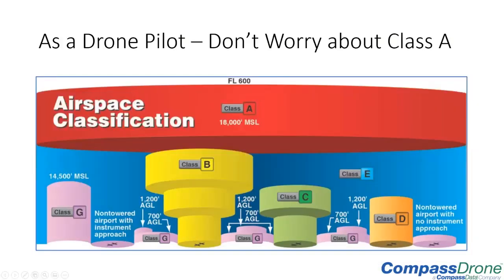Class A — let's not worry too much about Class Alpha. It's depicted in red and starts at 18,000 feet above mean sea level. Even if you're on top of a Colorado 14er and fly your drone up to 400 feet, you're still not in Class Alpha airspace. You'd essentially have to climb most of the way up Denali and then launch a drone to enter it — a pretty rare occurrence.